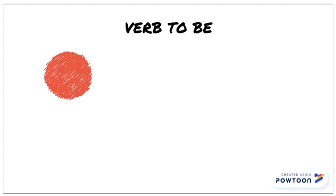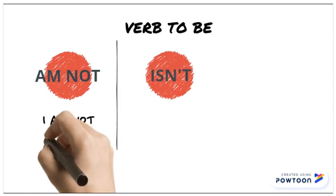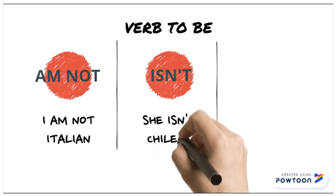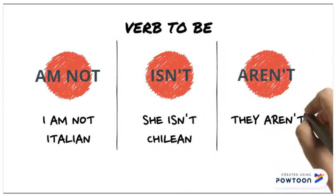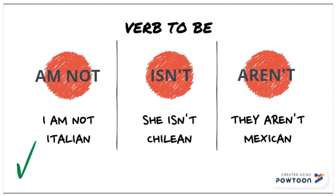Now please check the verb to be and its three forms in negative examples: I'm not, isn't, and aren't.